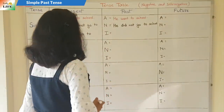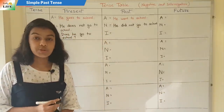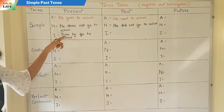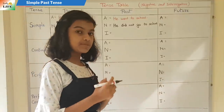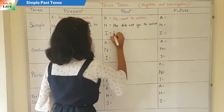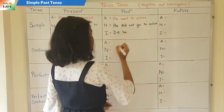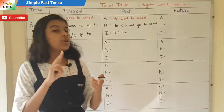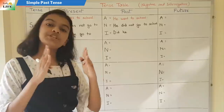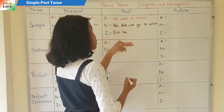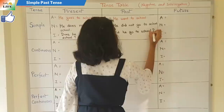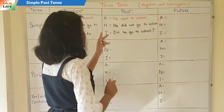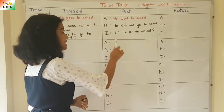Now the interrogative form of simple past tense. We use 'did' and interchange the position of the subject and 'did'. So: 'Did he go to school?' As mentioned, once 'did' is used, we write only the first form of the verb — 'go'. The three forms are: affirmative — 'He went to school'; negative — 'He did not go to school'; interrogative — 'Did he go to school?'